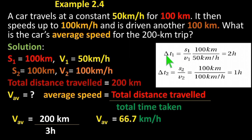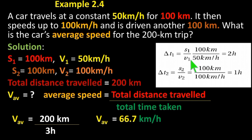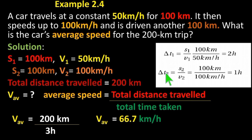The change of time for segment 1 equals distance 1 over speed 1: 100 km divided by 50 km per hour equals 2 hours. The change of time for segment 2 equals 100 km divided by 100 km per hour equals 1 hour.